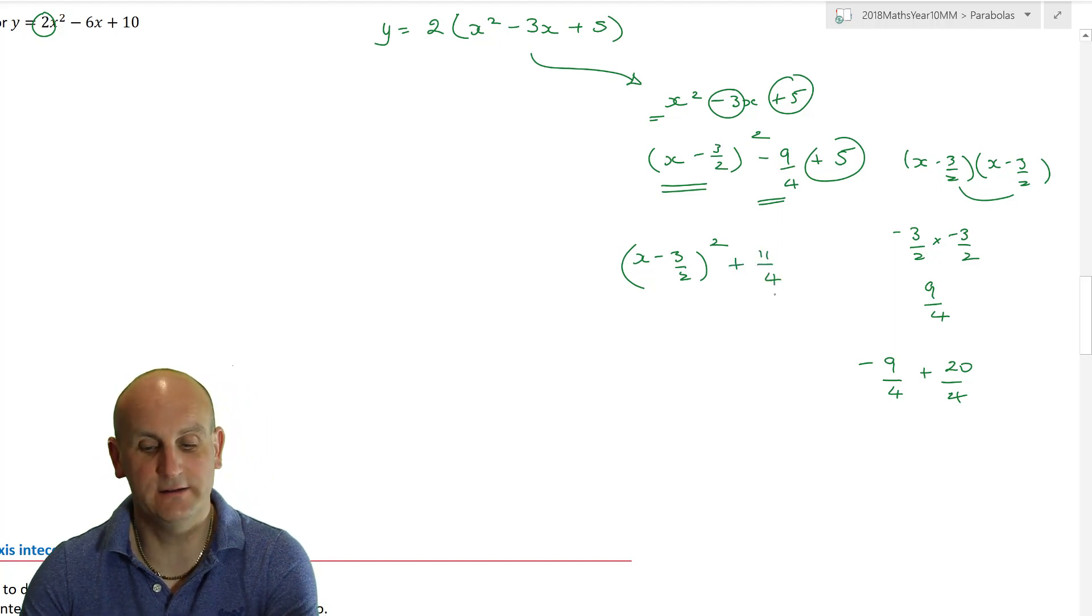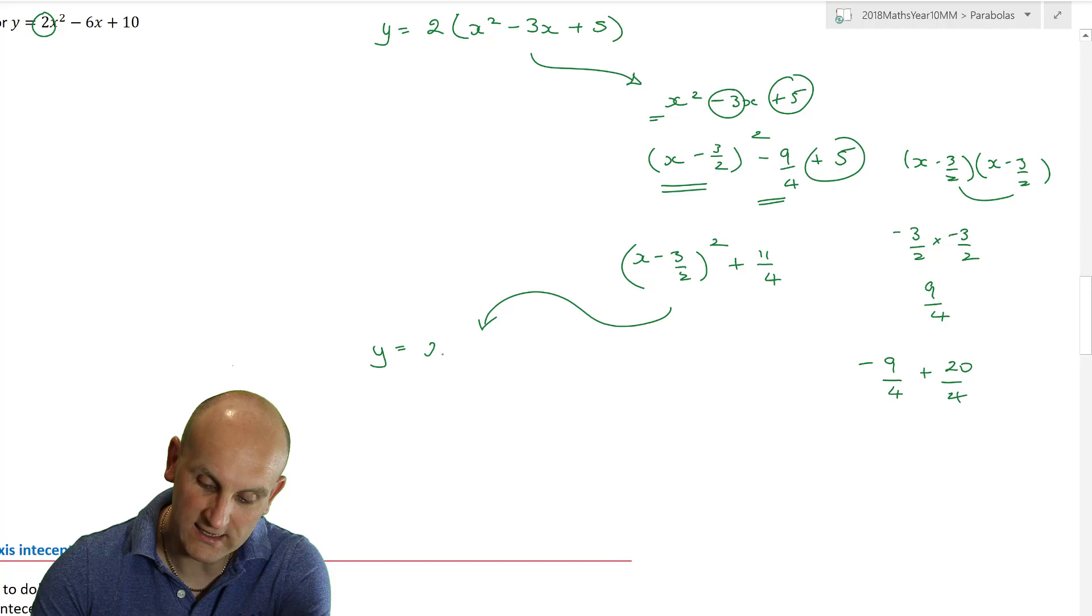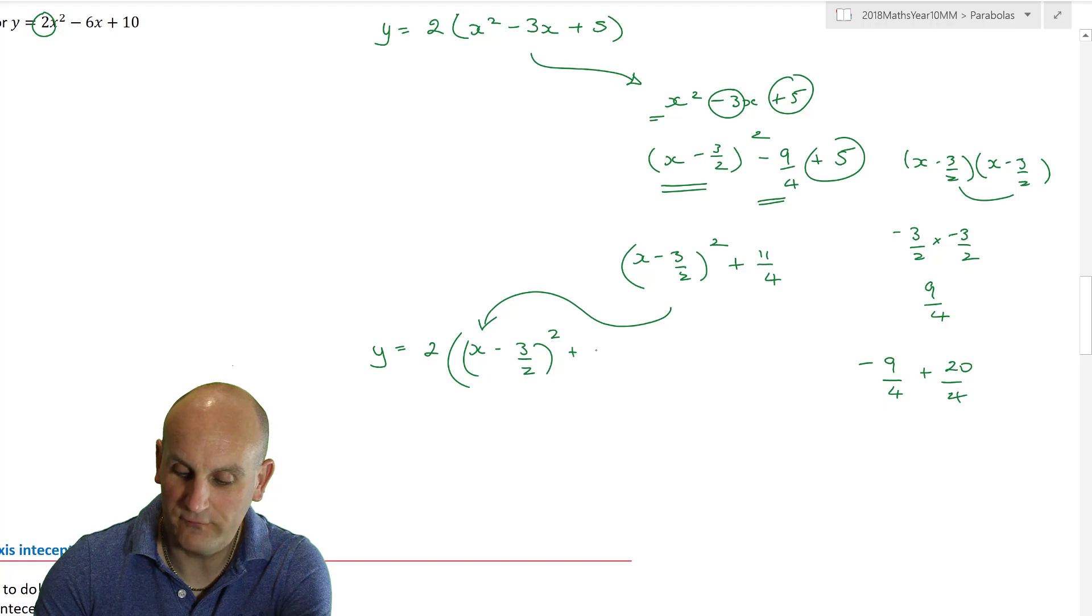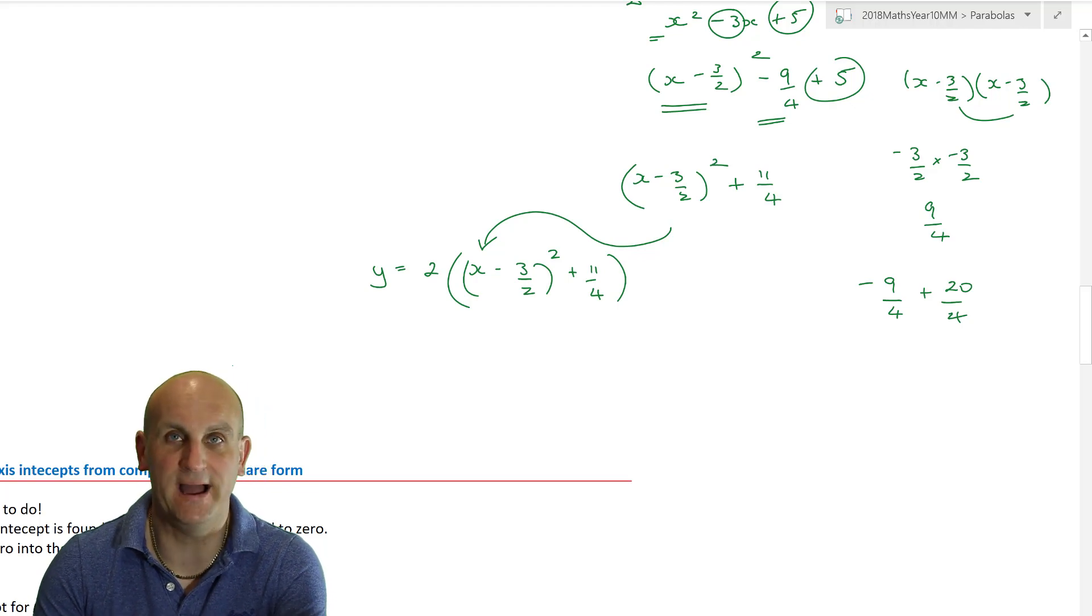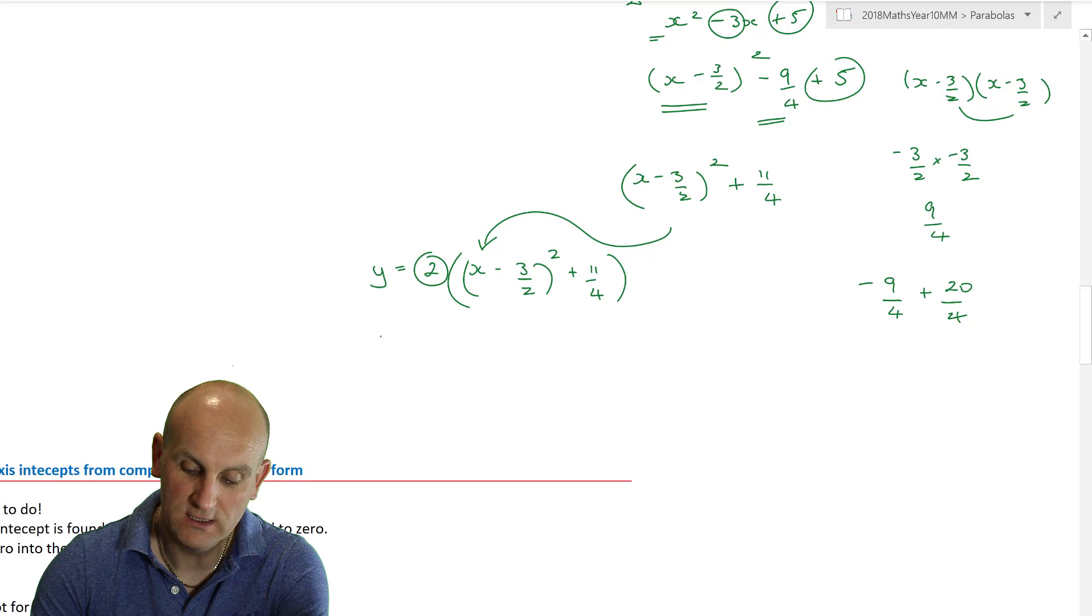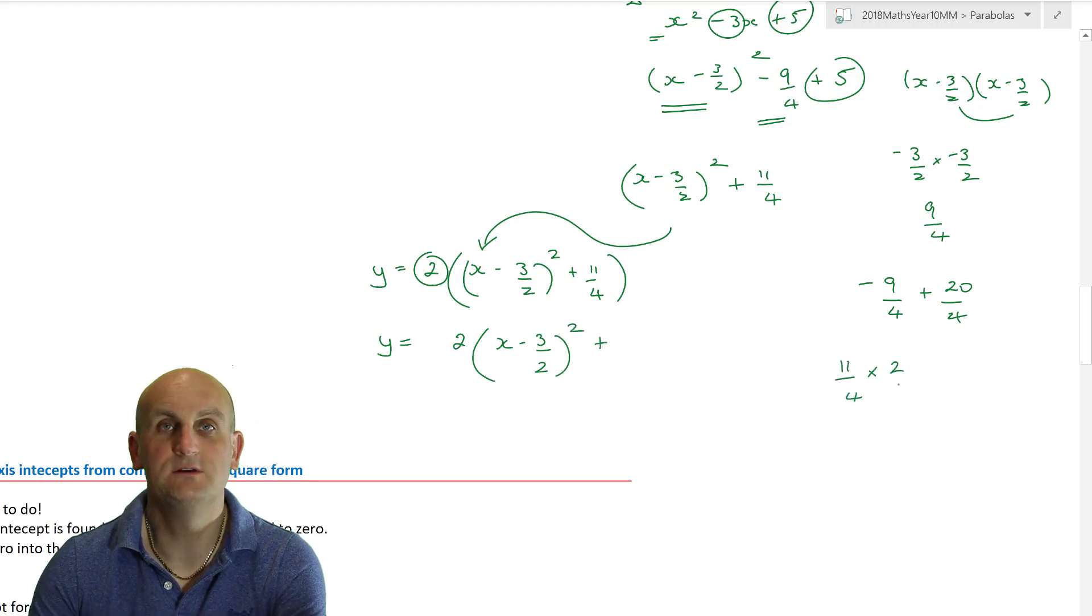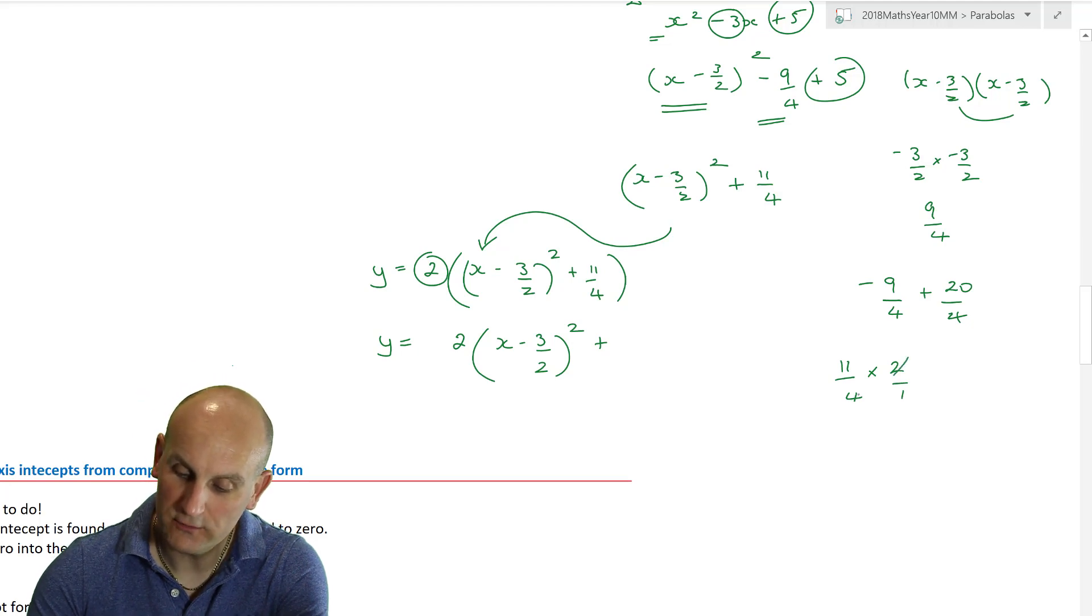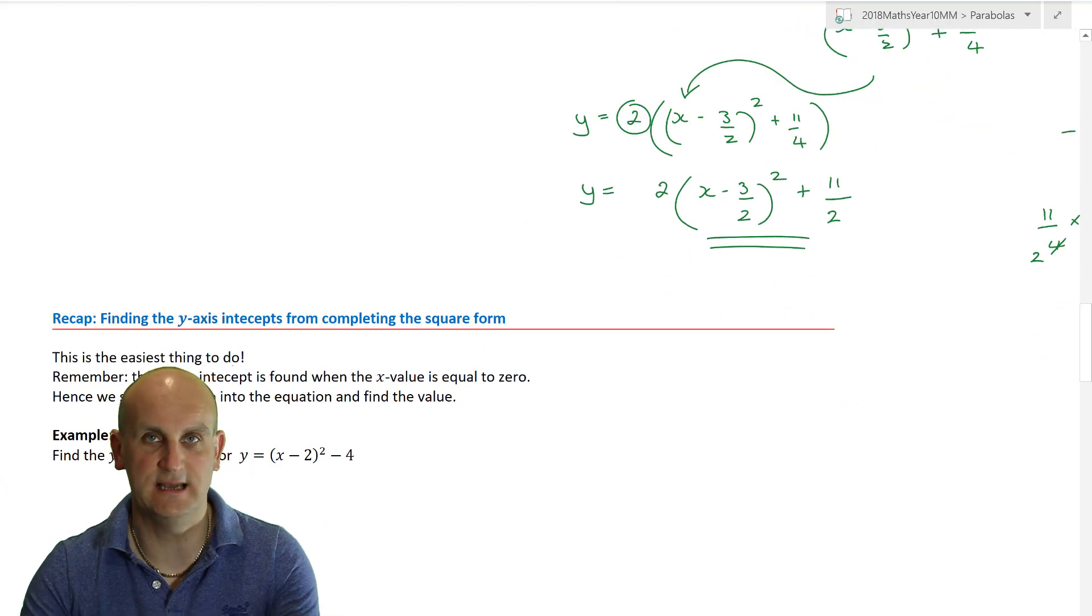And you're going to say, whoa, was that the end of the question? Nope. Remember, that was the breakout. So I now need to put that back in. So y gives me 2 brackets x minus 3 on 2 in its own brackets squared plus 11 on 4 closed brackets. And we're almost there. Almost. Because what I now need to do is multiply this 2 back to get it back into a form I'm actually looking for. So y is equal to 2 lots of x minus 3 on 2 all squared plus. Now 11 on 4 times 2, which is 2 over 1. 2's go into there once, 2's go into there twice, and that absolutely gives me 11 on 2.